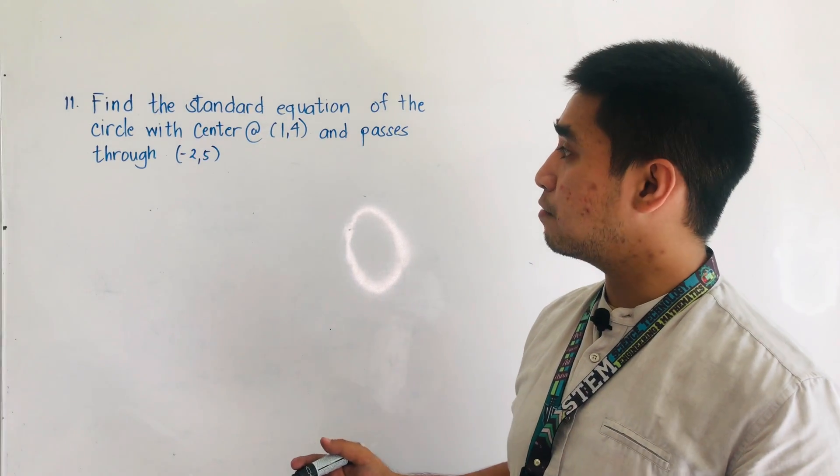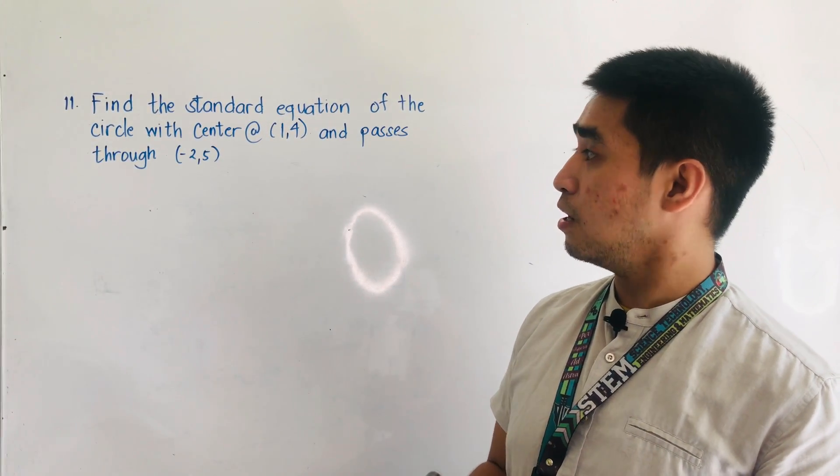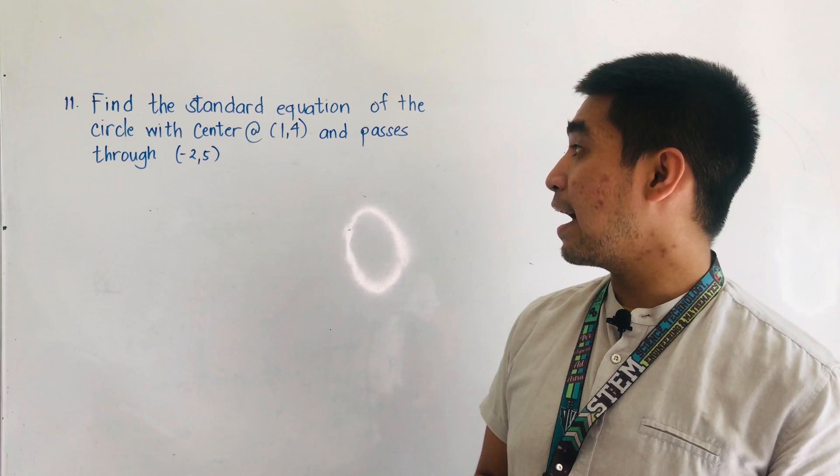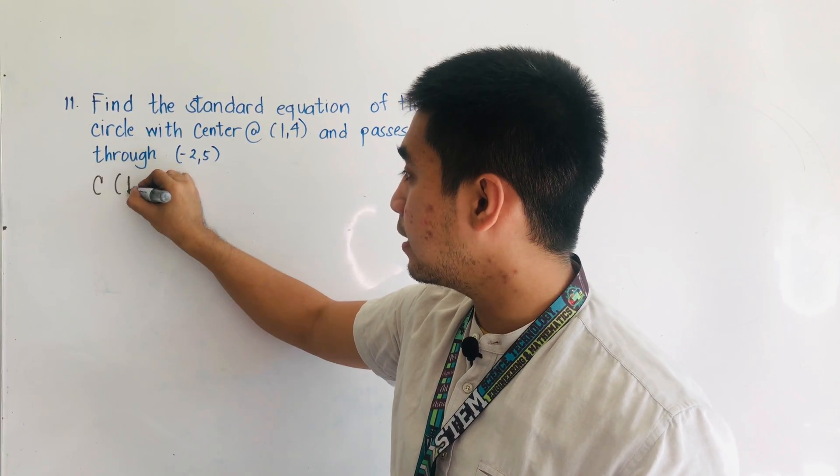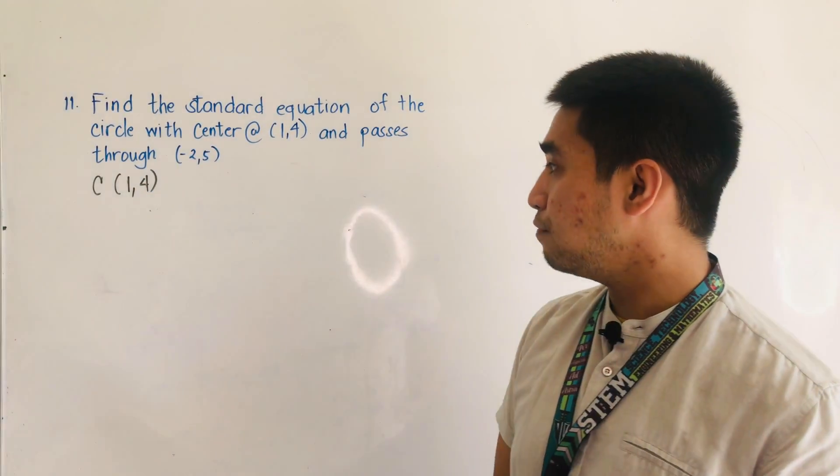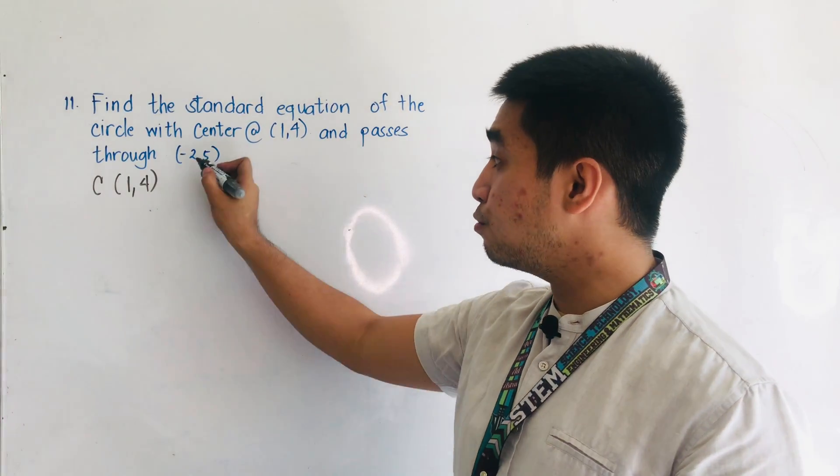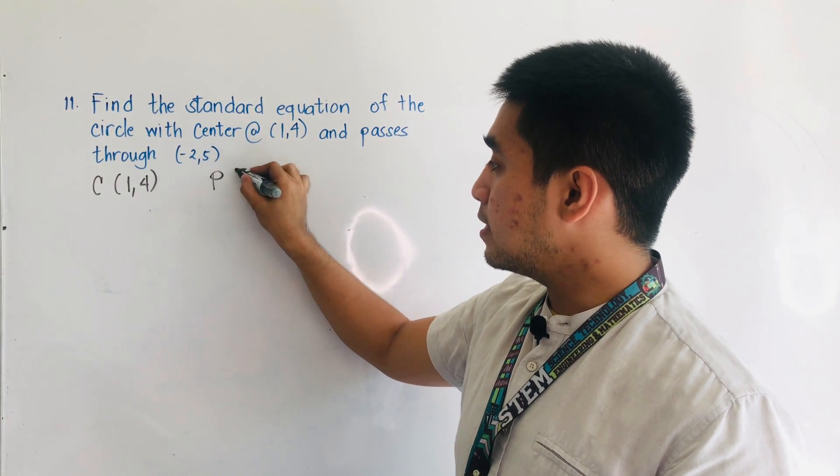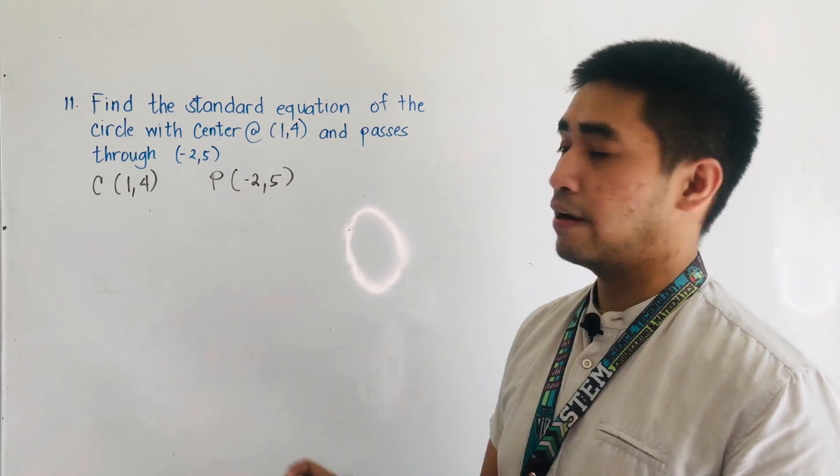For the 11th example, we are given find the standard equation of the circle with center at 1, 4. Let's write the given. Center is located at 1 and 4, and it passes through the point T. Let's say P is negative 2 and 5.